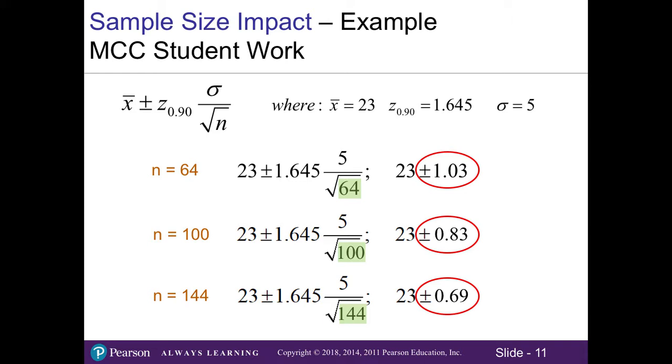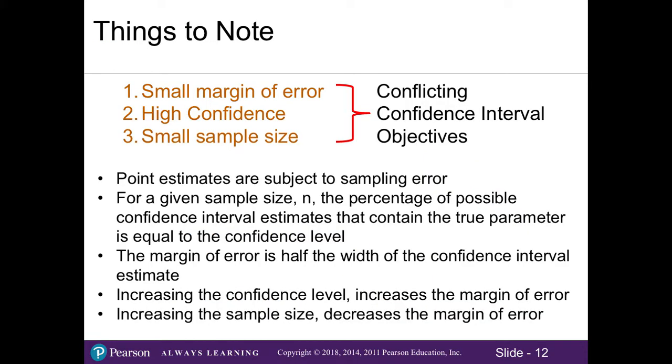So a smaller margin of error is better because that means we're closer to our true population mean. Now here's the issue with that though, is we've got some conflicting confidence interval objectives. We want a small margin of error, meaning we want to be as close to the true population mean as possible. We want a high confidence because 99% is better than 80%, which means more of our intervals are within that shaded area. And at the same time, we want a smaller sample size because in business we have limited resources such as time and money to be collecting sample data. So we have to find the right balance of these three components.